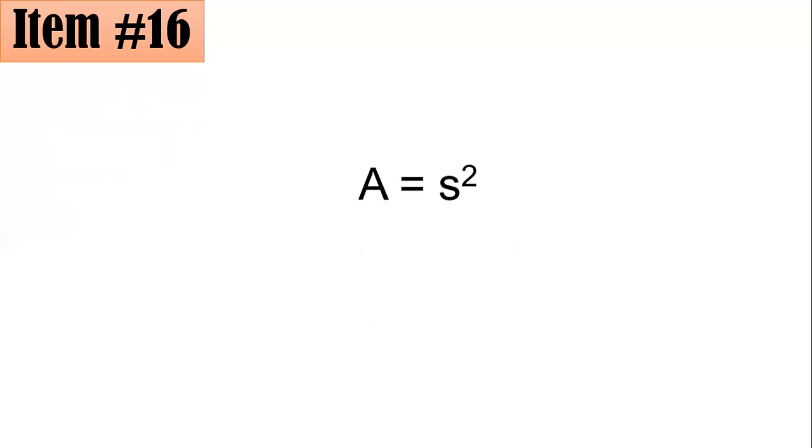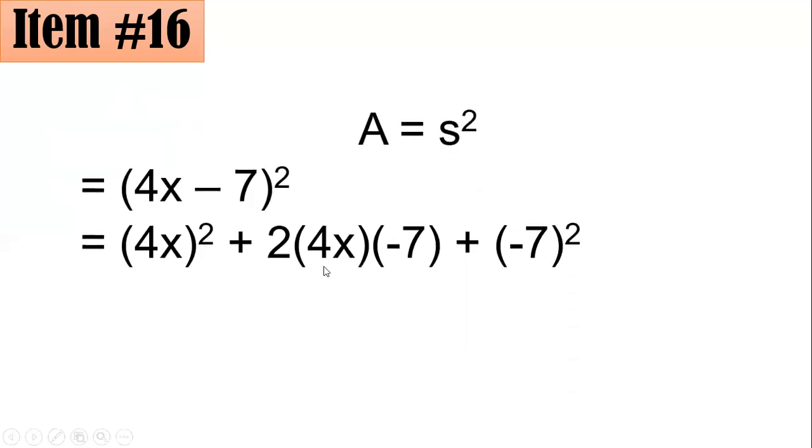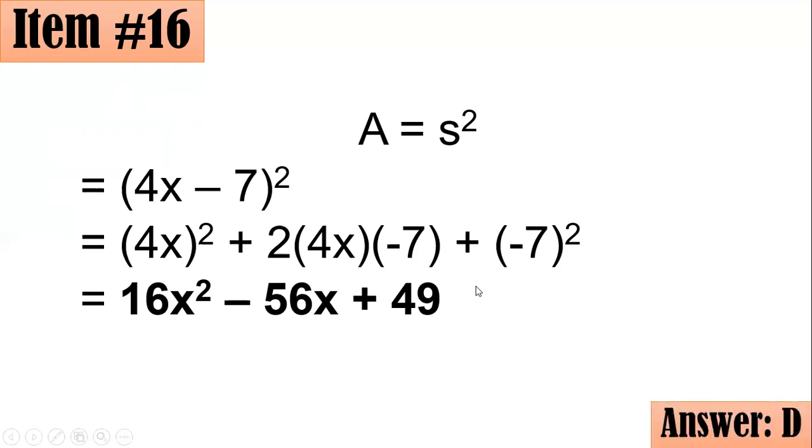And add twice the product of the first and the second term. So, we have plus 2 times 4x times negative 7, plus the square of your last term, which is negative 7. So, if you square 4x, that will give you 16x squared. 2 times 4x times negative 7 is negative 56x, then plus the square of negative 7, which is 49. And this is now your simplified answer, your answer, which is letter D. I hope you got it.